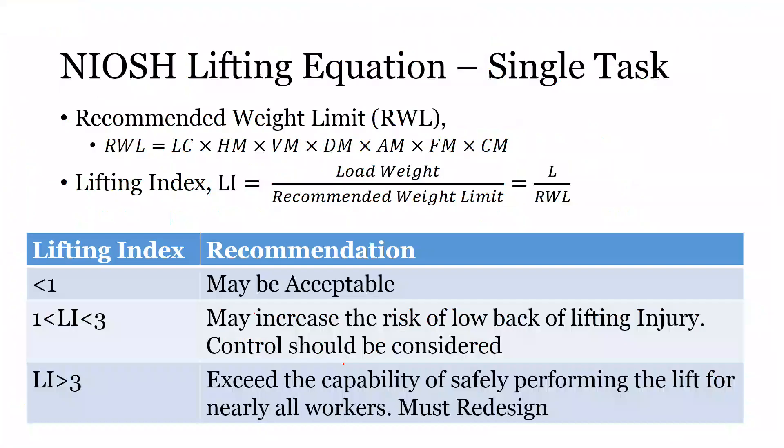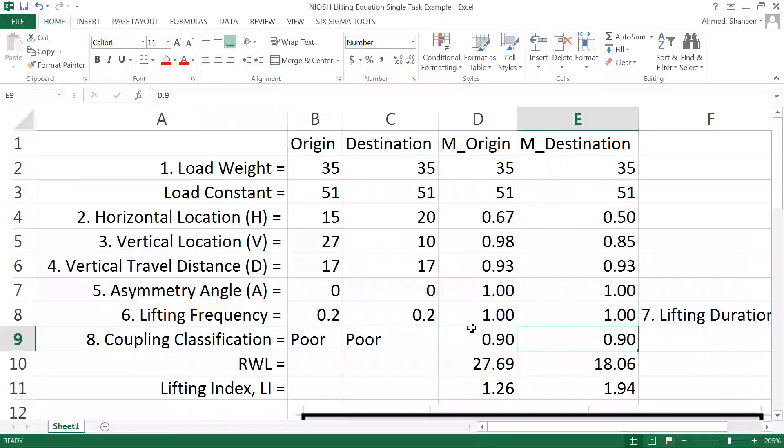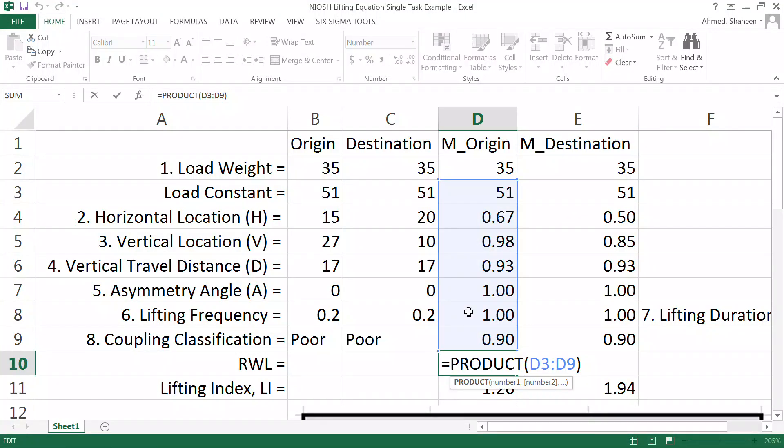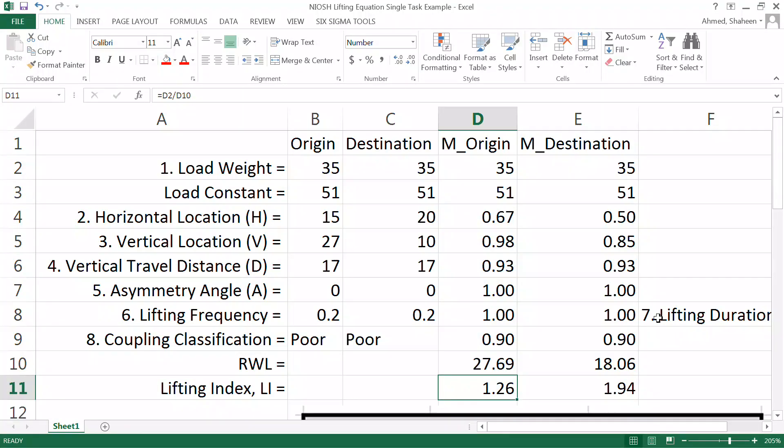To get the total value for the recommended weight, you use this equation. Basically multiply all the multipliers with the load constant. There is a function in Excel called product, and then you multiply all of them. You found that at the origin, you can lift almost 28 pounds.